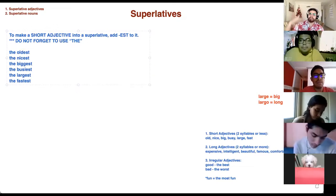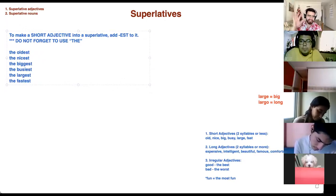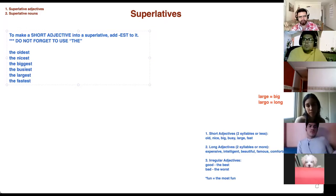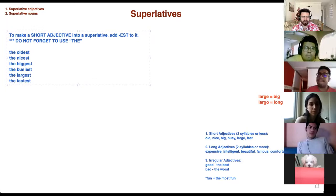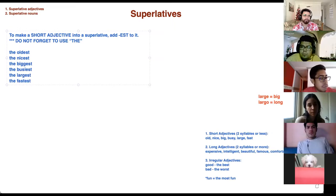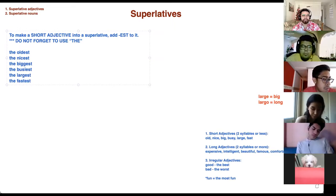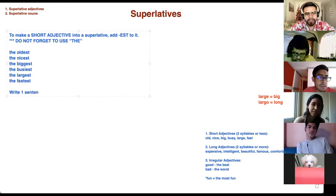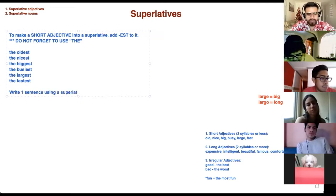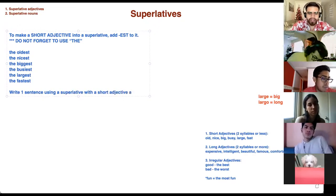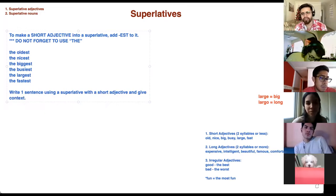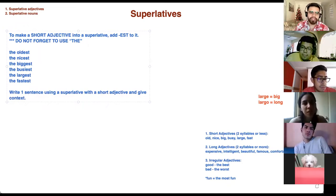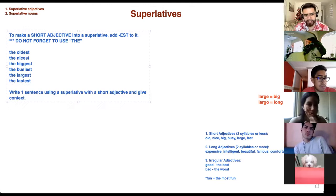And we use superlatives to talk about the maximum and the minimum. El más viejo, el más amable, el más grande. The maximum or the minimum. The largest, the smallest. El más grande, el más pequeño, el más rápido. So in your notebook, I want you to write one sentence using a superlative with a short adjective. Give context. Don't just say my grandpa is the oldest. Give context. We need to understand what you're trying to say with the context.